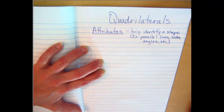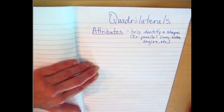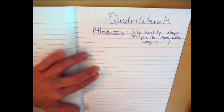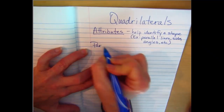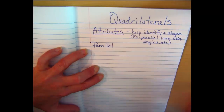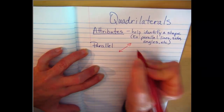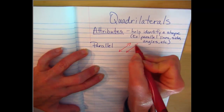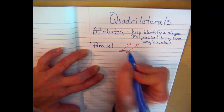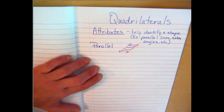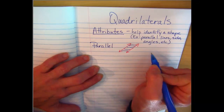When looking at attributes of shapes, it's really important to identify what parallel lines are. Everybody hold up your arms and make them into parallel lines. Good — they run side by side just like that. Parallel lines are two line segments that will never ever cross; they run side by side forever. Think about railroad tracks — they go on and on and they never cross.